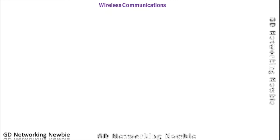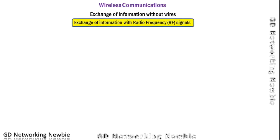Today we are going to discuss the basics of wireless communication. The simplest definition is that with wireless communication we exchange information without wires. For example, we can connect two computers with the help of a wire or cable to exchange data, but in wireless communication we exchange that information without wires — and that is possible with the help of radio frequency signals.